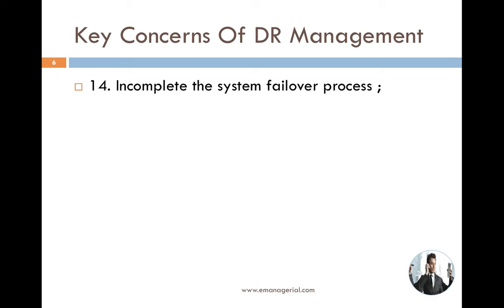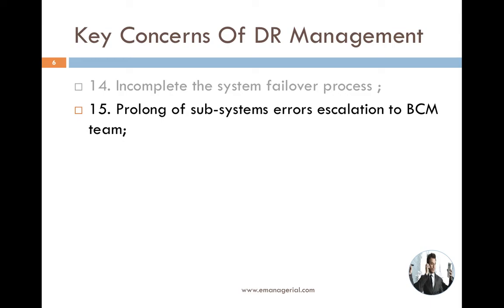The next concern is an incomplete system failover process, which is related to the system and infrastructure. The infrastructure team lead may not be fully aware of the detailed work plan when failing over to the alternative site. Sometimes they miss certain steps or paths, which leads to an incomplete system failover process.